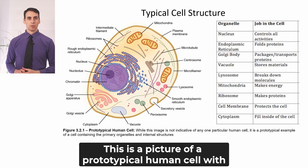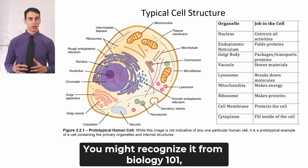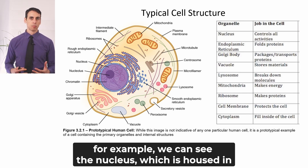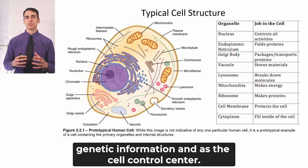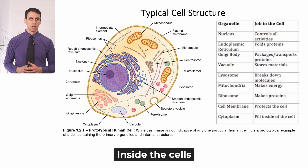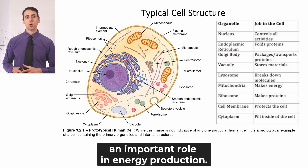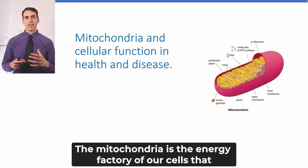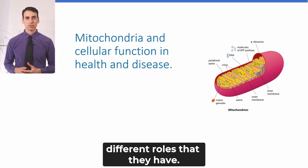This is a picture of a prototypical human cell with the primary organelles and internal structures — you might recognize it from biology 101. We can see the nucleus, which houses the cell's genome and serves both as storage for genetic information and as the cell's control center. Inside the cells we have all these different organelles, but I want us to focus on the mitochondria today, which has an important role in energy production.